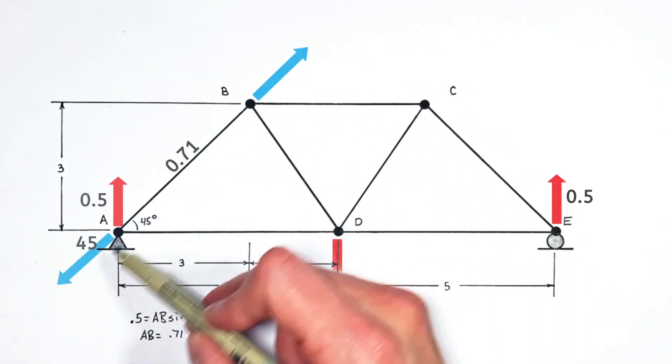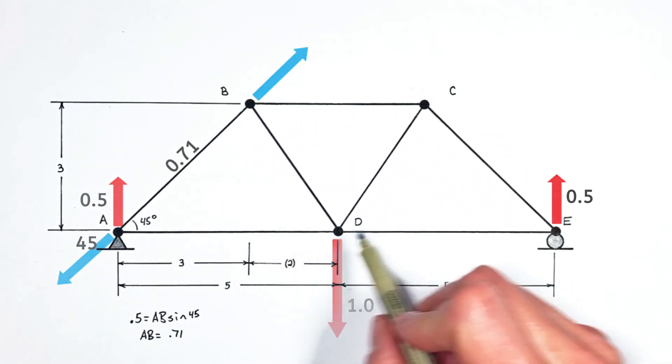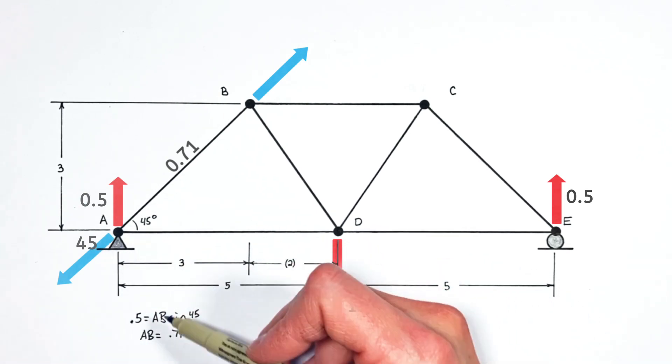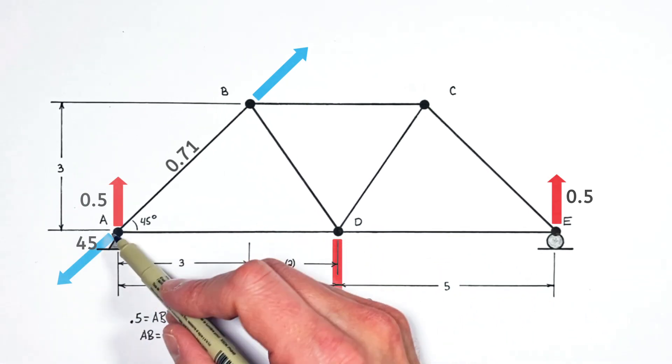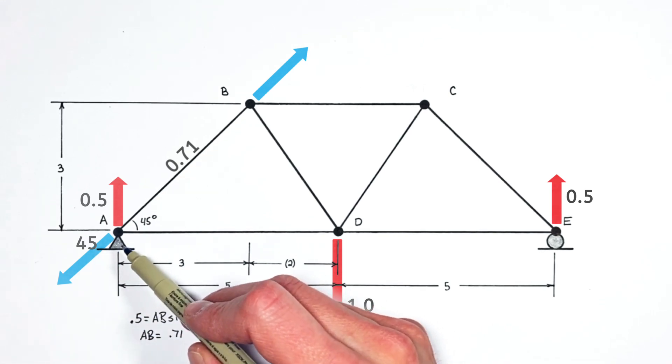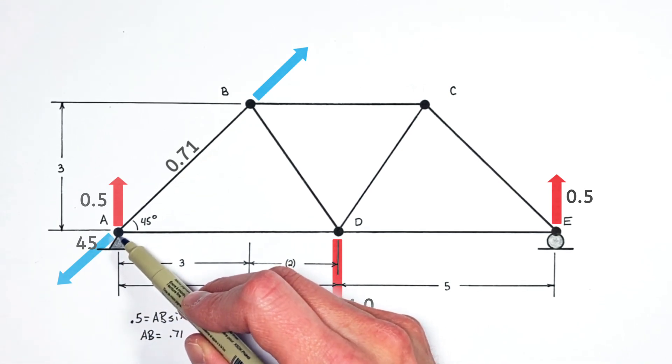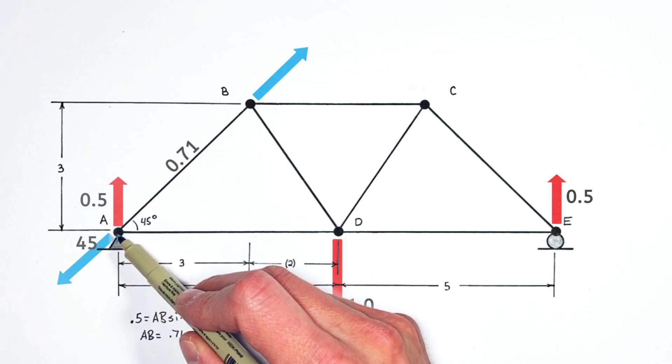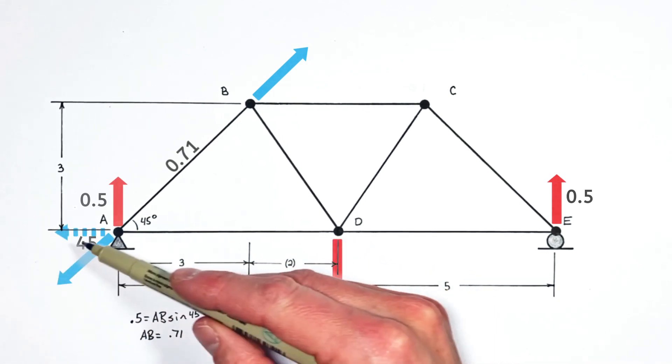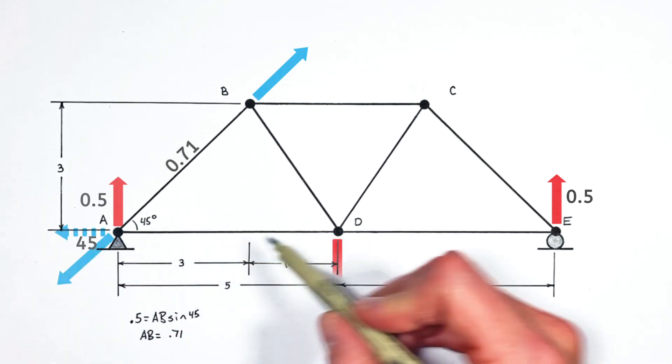And now that we know the total force in AB, we can turn around and solve for the actual force in AD. Remember, the force in AB is down and to the left. Now this pin is not acting horizontally on the truss, which means the only thing that can be fighting the leftward force of beam AB is the force by AD.